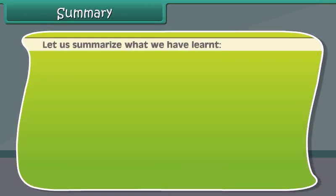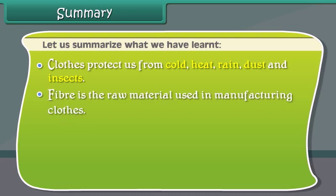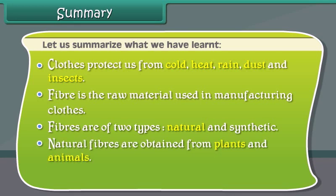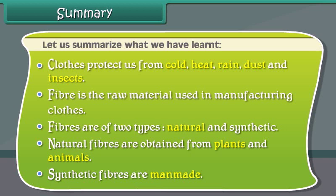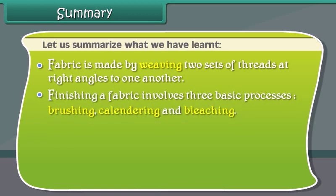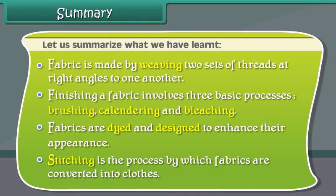Let us summarize what we have learned. Clothes protect us from cold, heat, rain, dust, and insects. Fiber is the raw material used in manufacturing clothes. Fibers are of two types: natural and synthetic. Natural fibers are obtained from plants and animals, while synthetic fibers are man-made. Fabric is made by weaving two sets of threads at right angles to one another. Finishing involves brushing, calendaring, and bleaching. Fabrics are dyed and designed to enhance their appearance. Stitching is the process by which fabrics are converted into clothes.